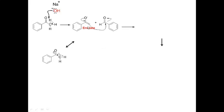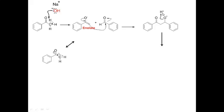Let's look at the arrows. The electrons in this double bond are going to attack the carbonyl of the aldehyde. You break the pi bond, and then you reform the pi bond here to get, in this case, an aldolate, which is this compound here. Once that is protonated — remember, we're doing this in ethanol, so there are some acidic protons present — you get a beta-hydroxy ketone, which is the aldol addition product.